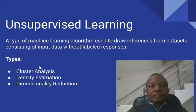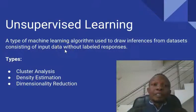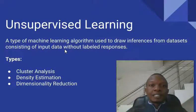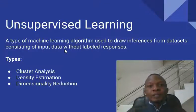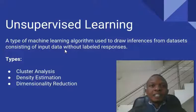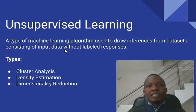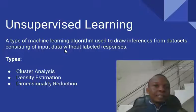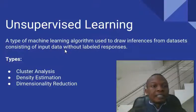Unsupervised learning is a type of machine learning algorithm used to draw inferences from datasets consisting of input data without labeled responses. In layman's terms, this simply means: gather a bunch of data, feed it into your machine learning system or software, and then the software finds patterns by itself and determines some sort of structure by itself. For instance, if you feed in a bunch of data of people that work in the local government secretariat, this system finds hidden structure in that data.